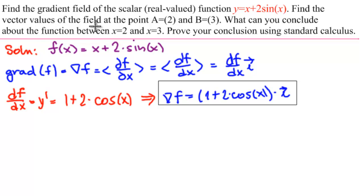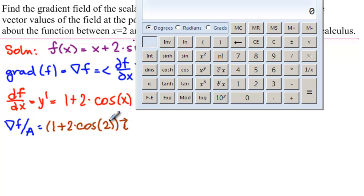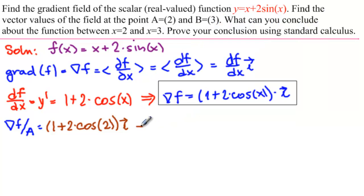Now we're to find the vector values of this field at these two points. So we're interested in del f at the point a, which would be 1 plus 2 times cosine, and x was 2, so we put a 2 in here, times i. Let's get a calculator for that. And remember, this has no degree sign, so we need radians here. So 2, and then cosine, and then times 2 plus 1 equals. And we'll round to three decimal places. So 0.168 equals 0.168 i.